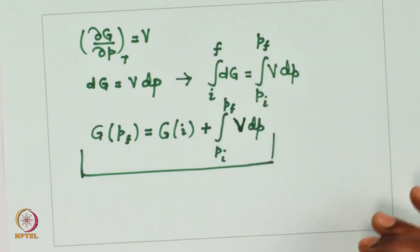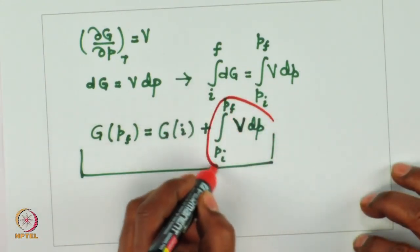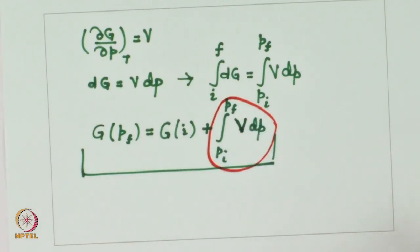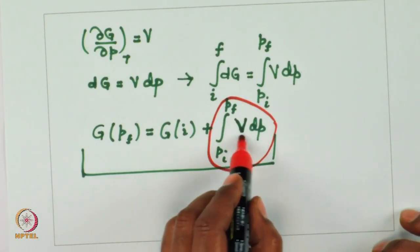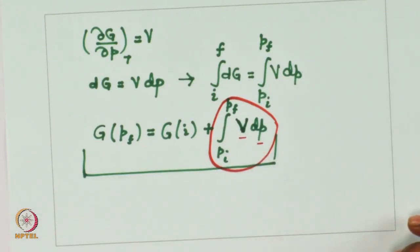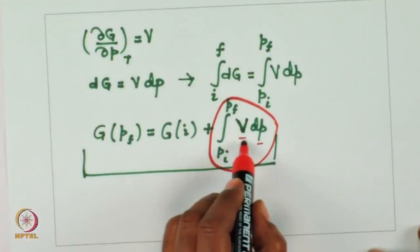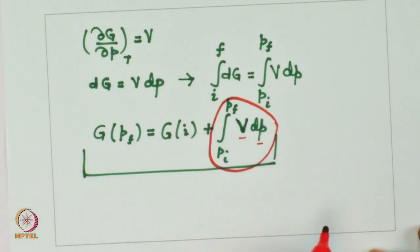This integral can be solved numerically or by a graphical method — plotting volume against pressure and calculating the area under the curve or line. We realize that the volume of solid and liquid does not depend significantly on pressure. So for solid and liquid we can conveniently consider volume to be independent of pressure and take it out of the integral.